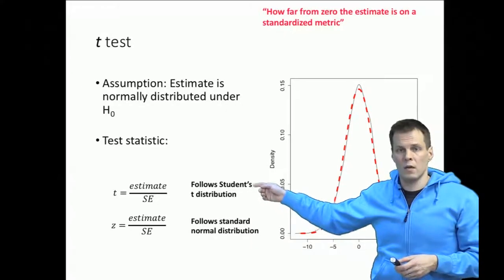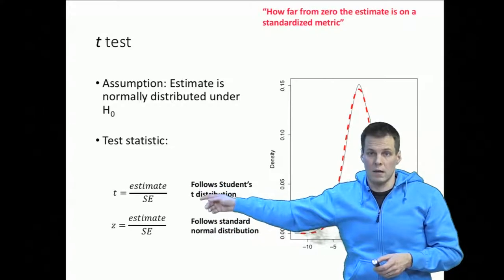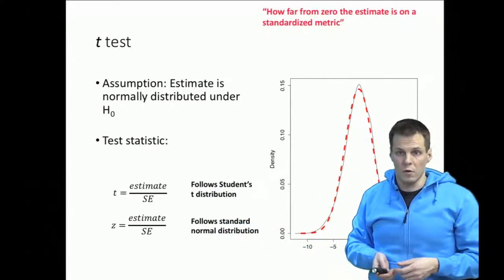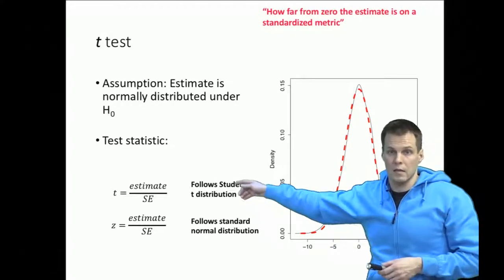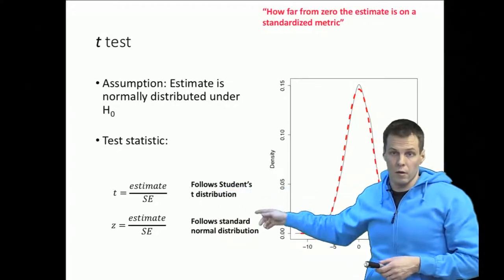Whenever you see a t or z well it just quantifies the estimate divided by its standard error and your statistical software will pick the proper distribution for you automatically. So you don't have to know anything else except that these are basically the same thing except that we compare against the different distributions.